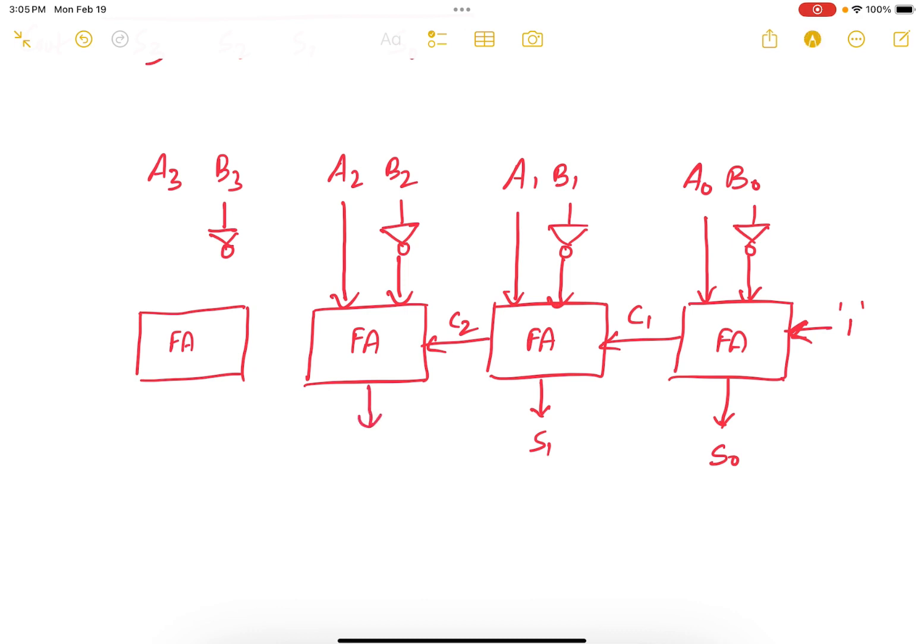Outputting S2 and carry 3, and the last full adder gets A3, B3, and C3, outputting S3 with a carry out. So this is a subtractor circuit. Now this is only going to work when A is greater than or equal to B.